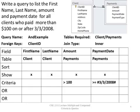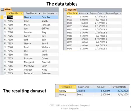Let's look at an example of an AND. Write a query to list the first name, last name, amount, and payment date for all clients who paid more than $100 on or after 3-3-2008. I'm using two fields here. The first field is the amount field, checking for greater than 100, and the payment date field checking for greater than or equal to 3-3-2008. Notice under the criteria row they're on the same line, so I'm checking for this AND this. If the amount is greater than 100 and the payment date is on or after 3-3-2008, the record will display in the Dynaset.